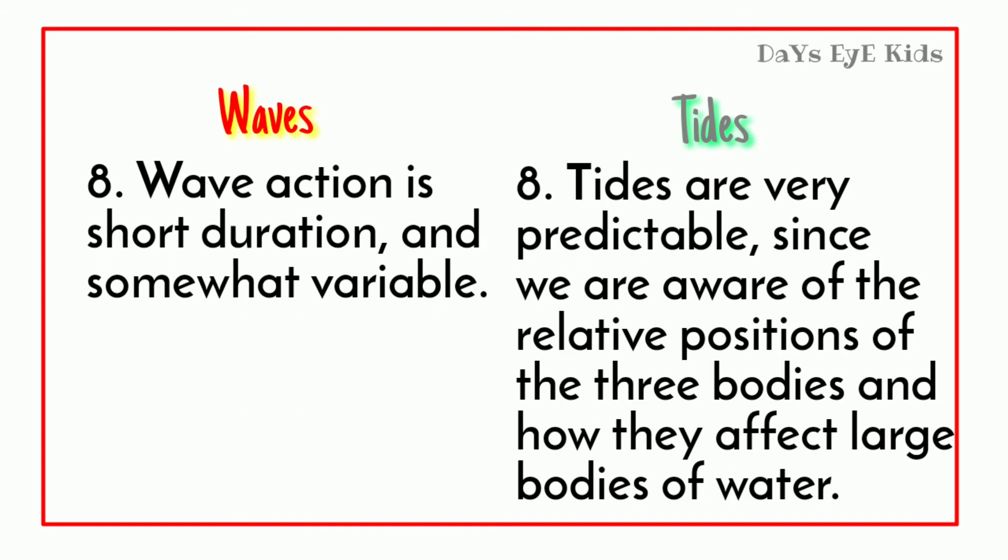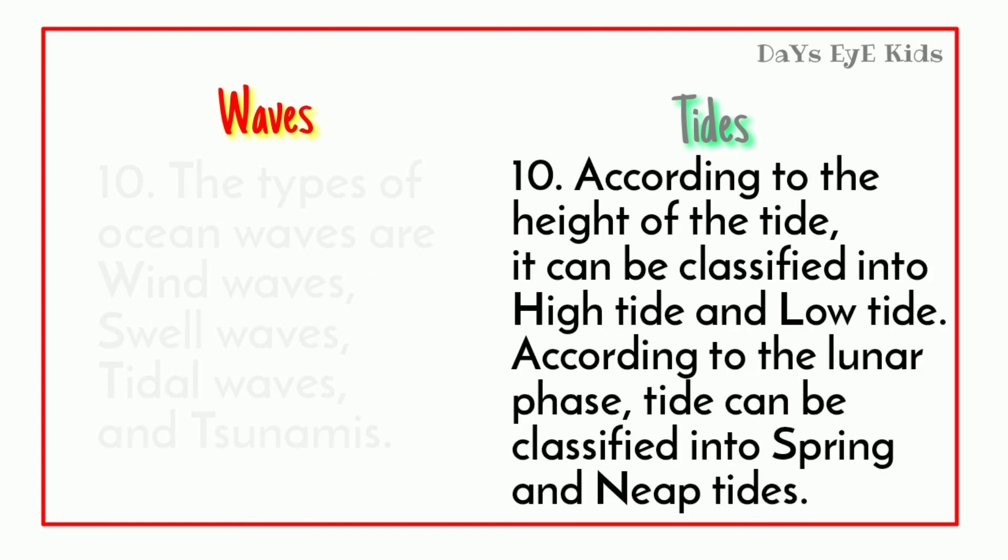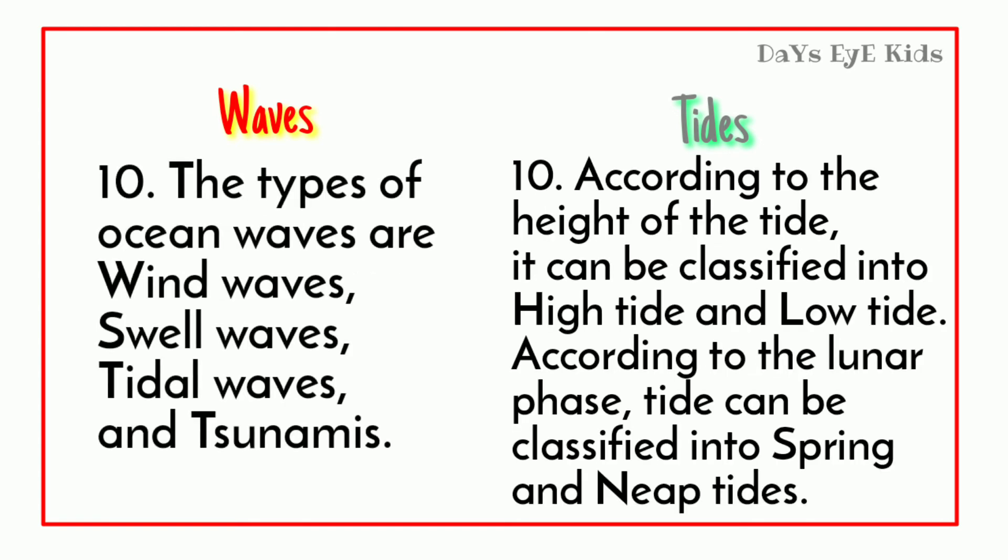Wave action is short duration and somewhat variable. Tides are very predictable since we are aware of the relative positions of the three bodies and how they affect large bodies of water. For example, weather changes every day — that represents waves; seasons change every year — that represents tides. The types of ocean waves are wind waves, swell waves, tidal waves, and tsunamis. According to the height of the tide, it can be classified into high tide and low tide. According to the lunar phase, tides can be classified into spring and neap tides.